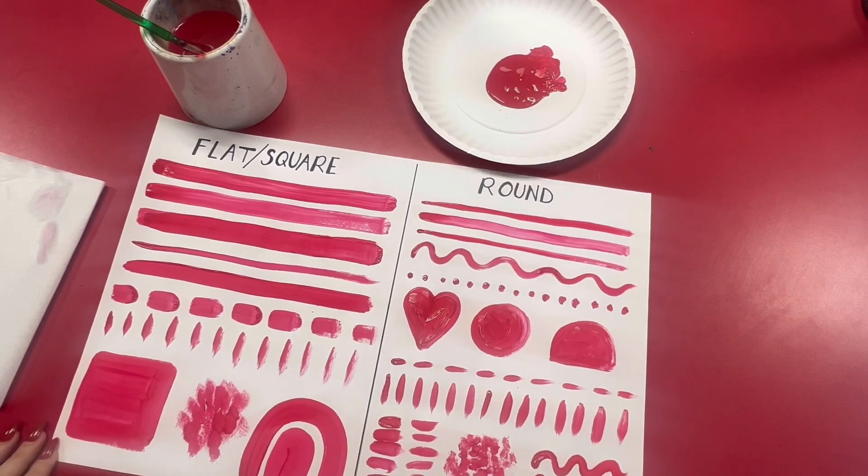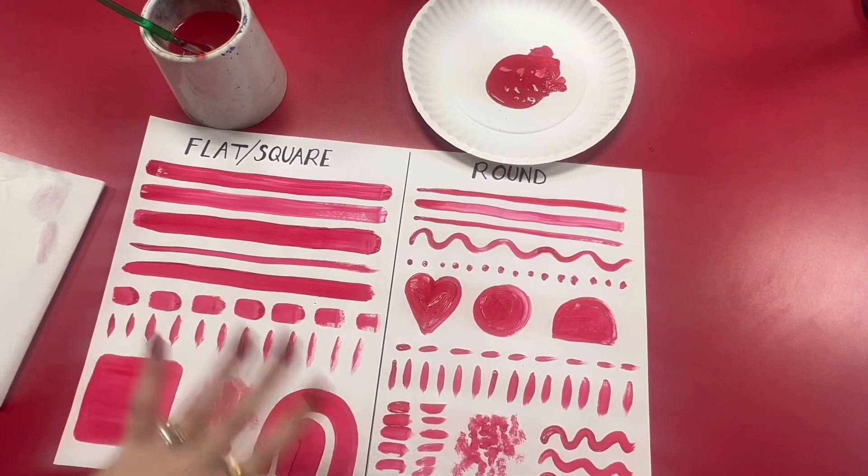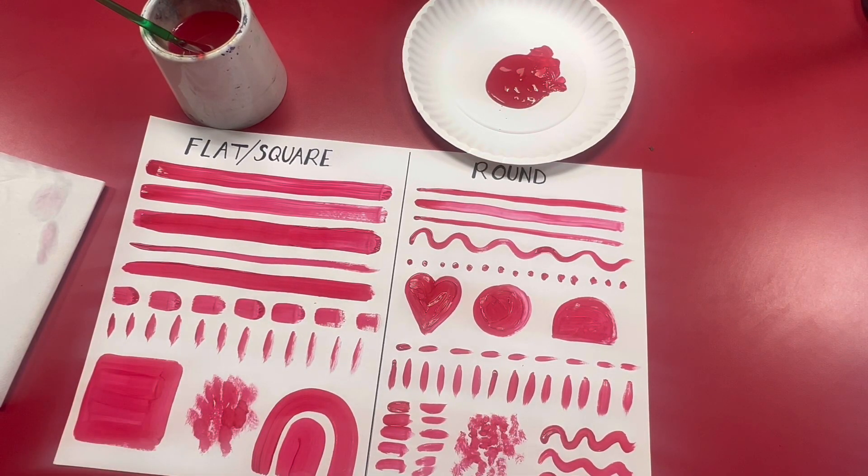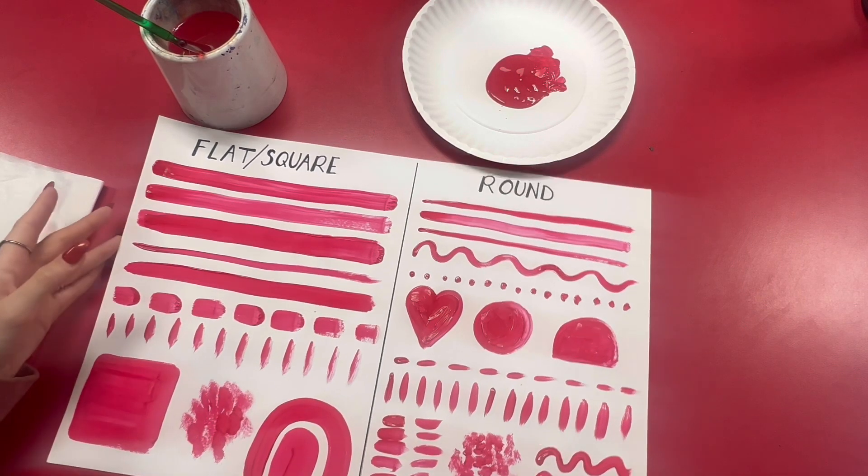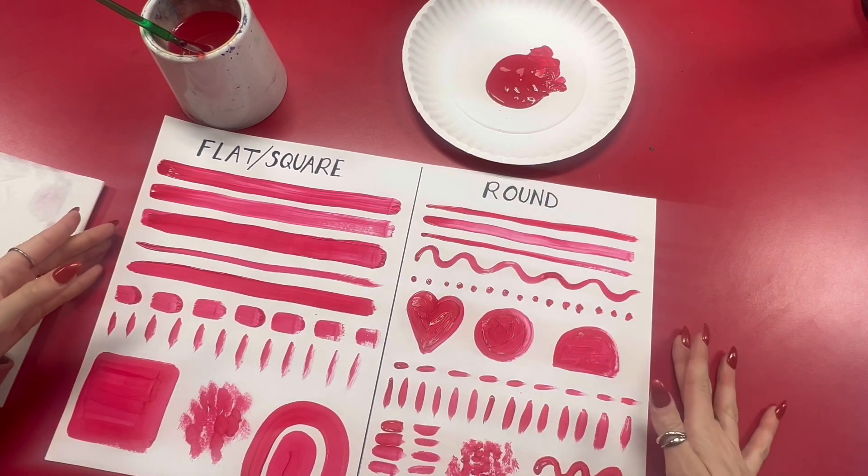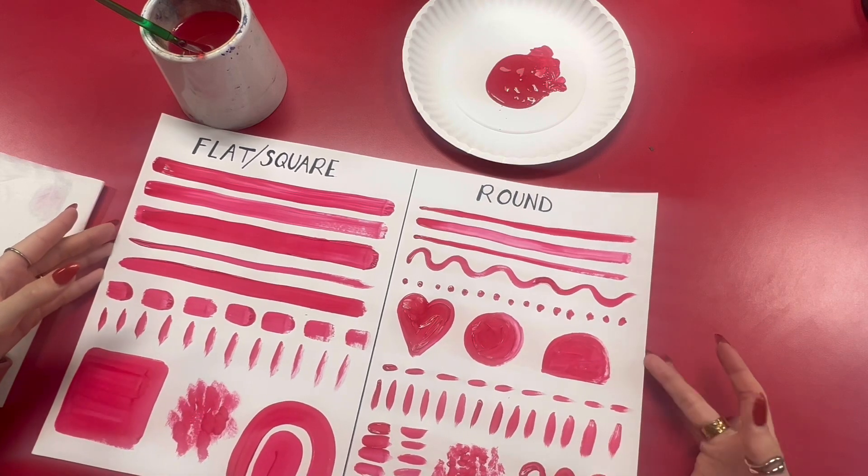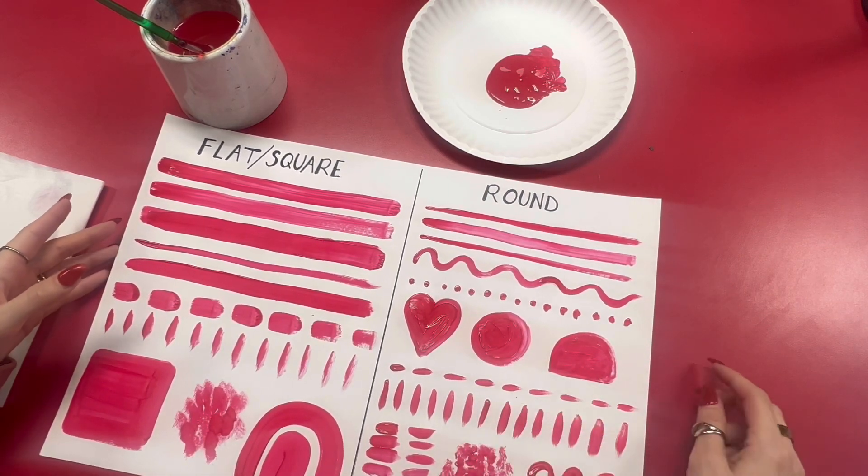Now we can see the difference that our lines have made. Thicker lines with the flat square brush and more detailed smaller lines with the round brush. This helps us fill in more details as well.